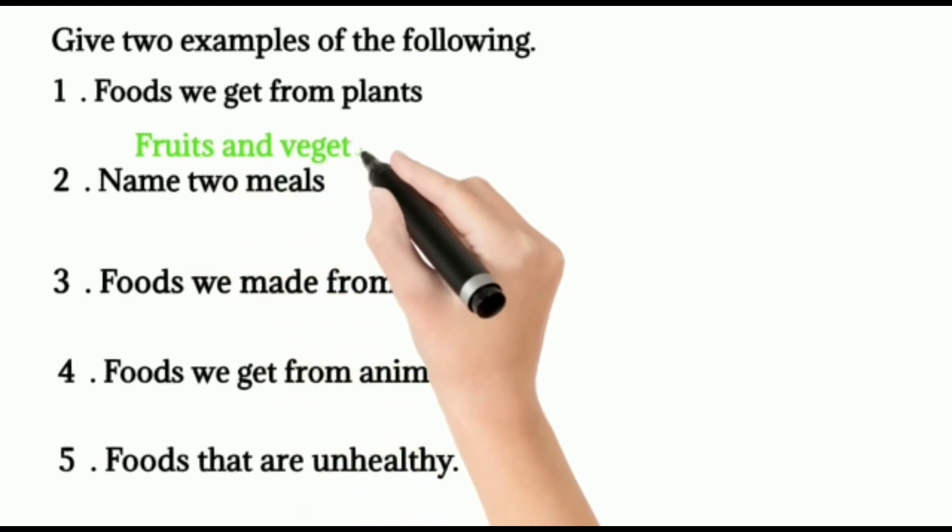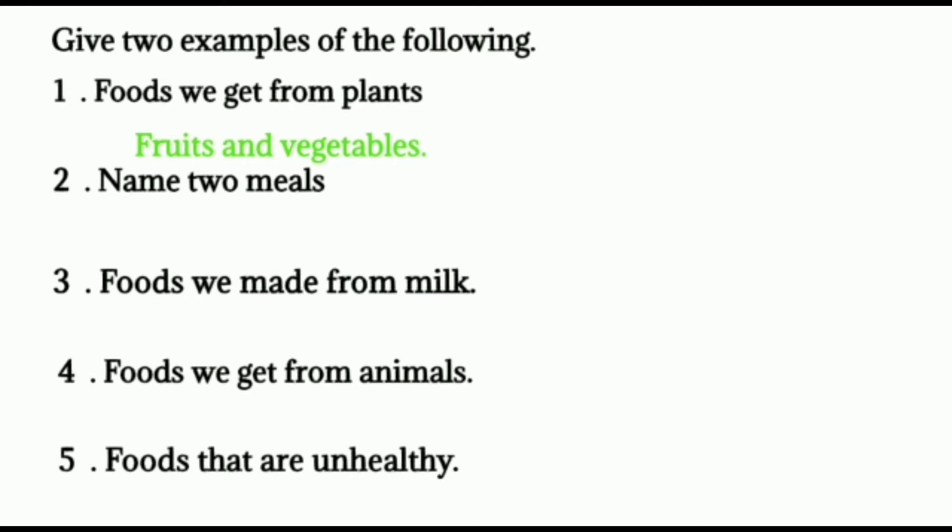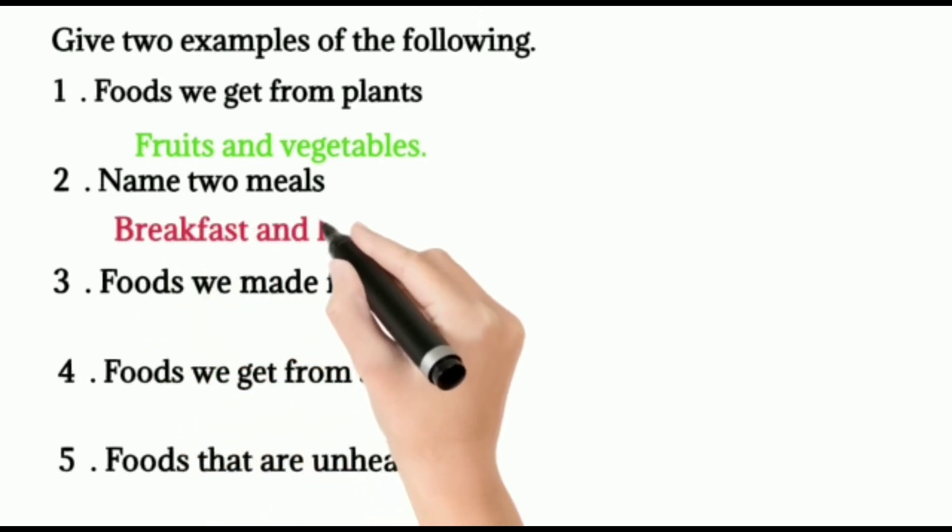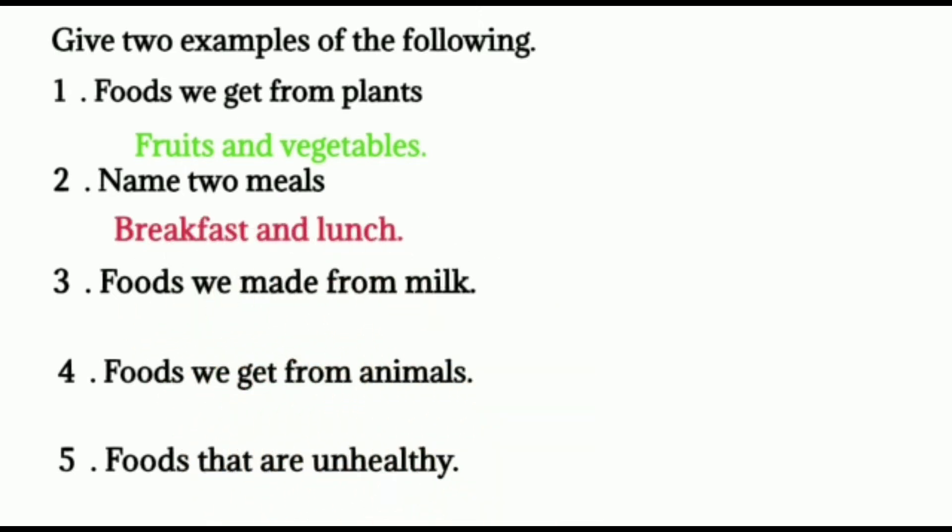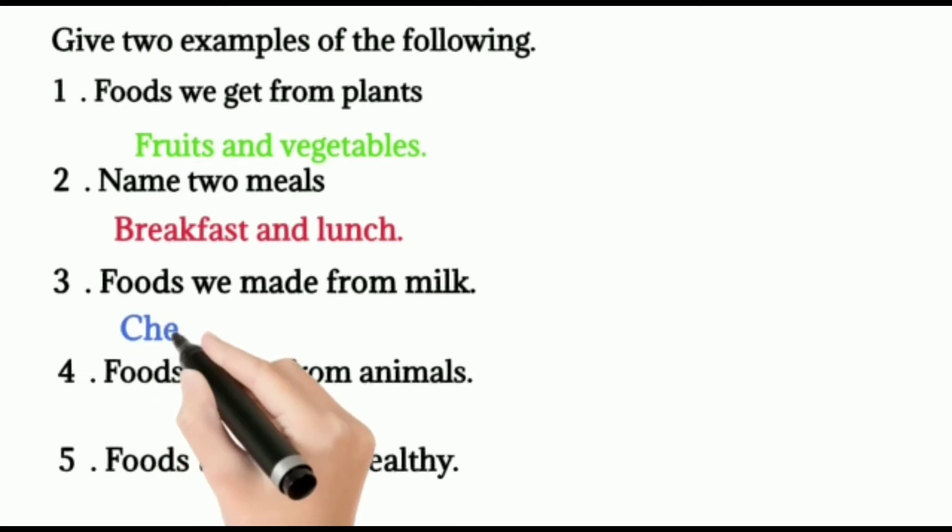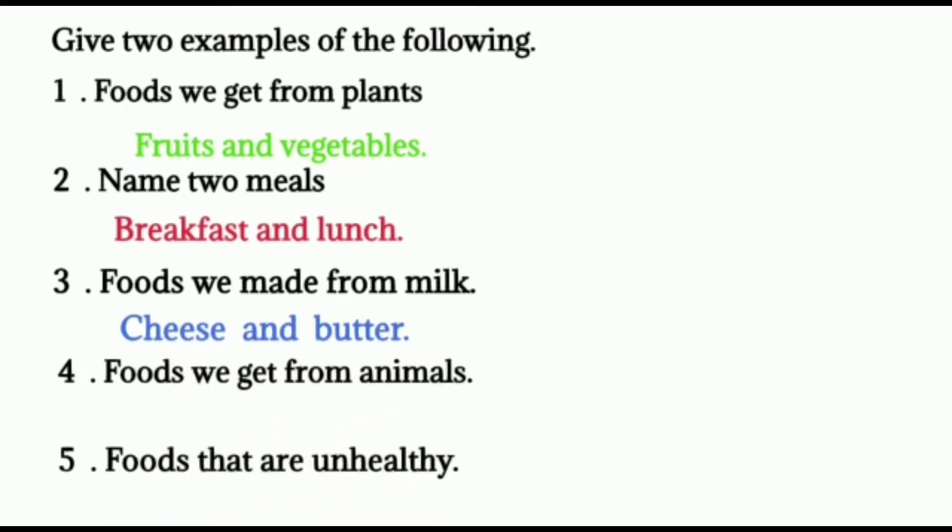Here fruits and vegetables. Two, name two meals. We know that three main meals in a day. You can write any two meals. Breakfast and lunch. Three, foods we made from milk. That is other milk products. Cheese, butter, ghee, yogurt, curd, etc. Here cheese and butter.